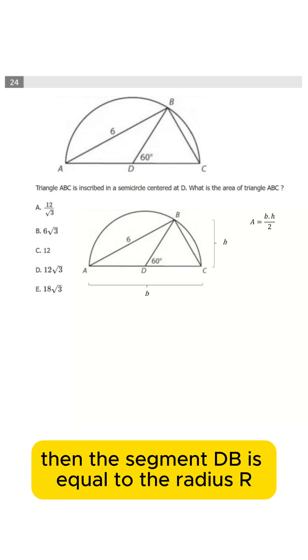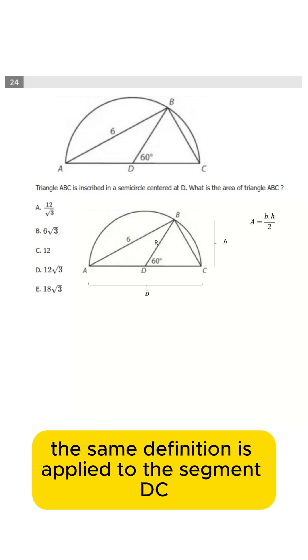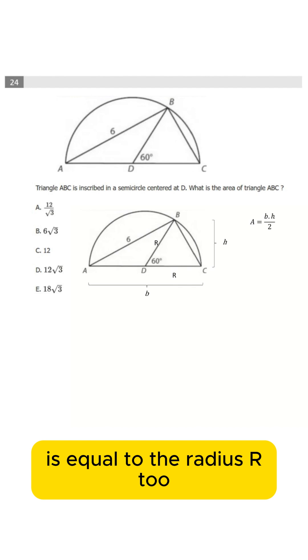D is the circle center. Then the segment DB equals the radius R. The same definition is applied to the segment DC, which equals the radius R too.